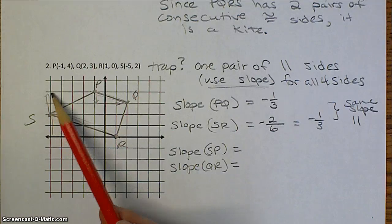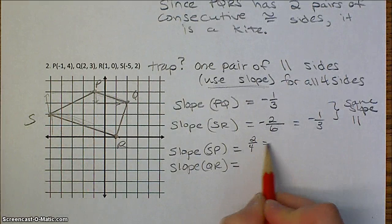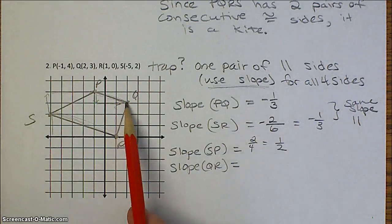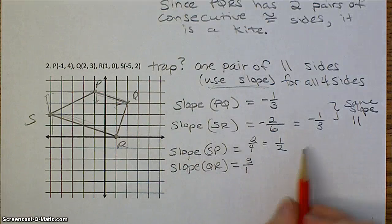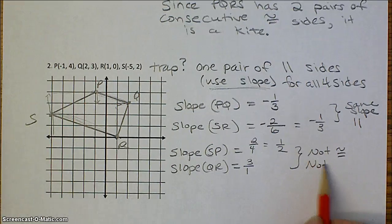So SP, that's going to be up 2 to the right 4, so 1 half or 1 over 2. And QR, that's up 3 to the right 1. So these are not congruent, so these are not parallel sides.